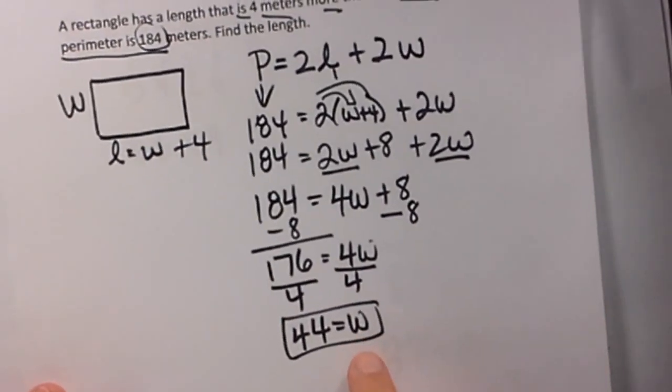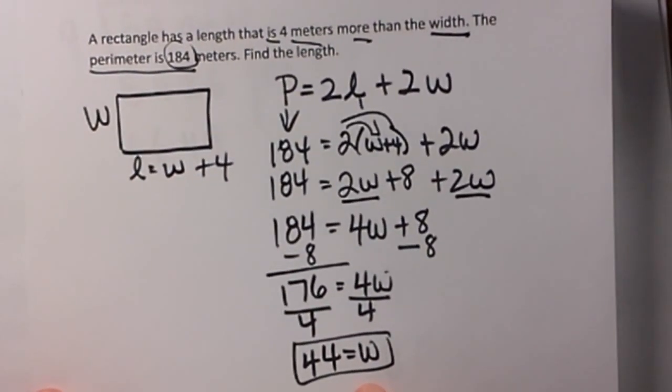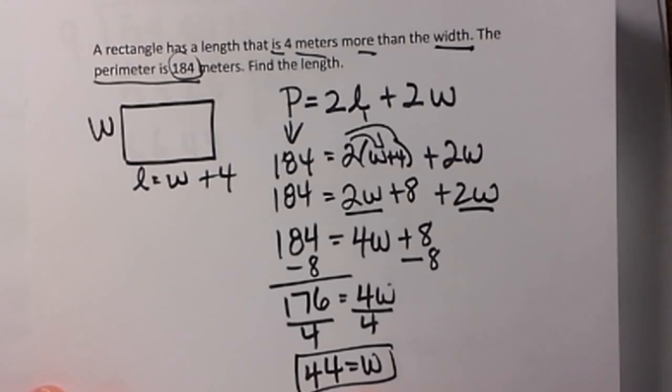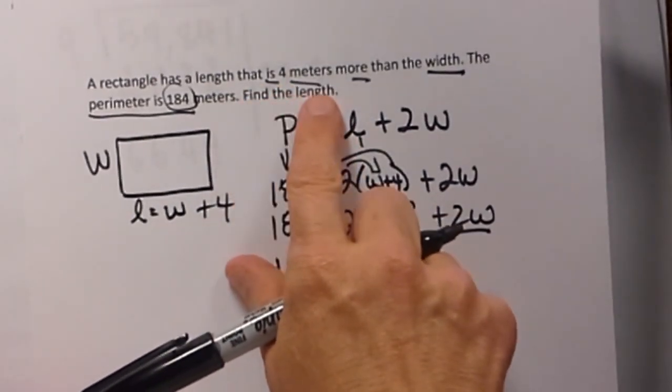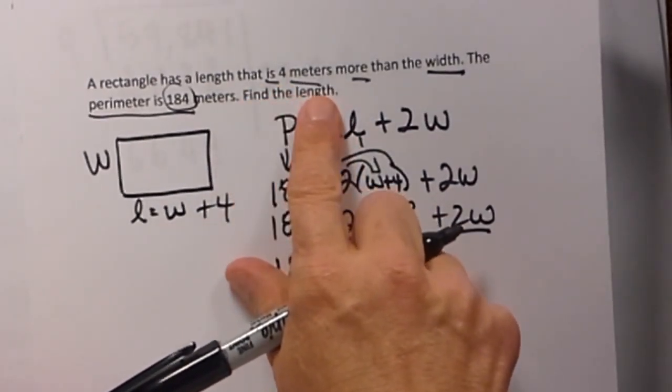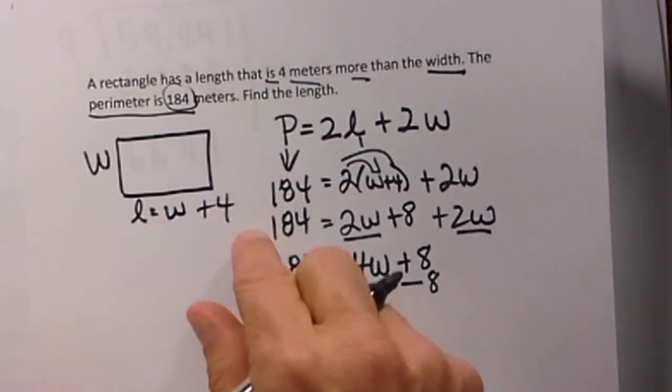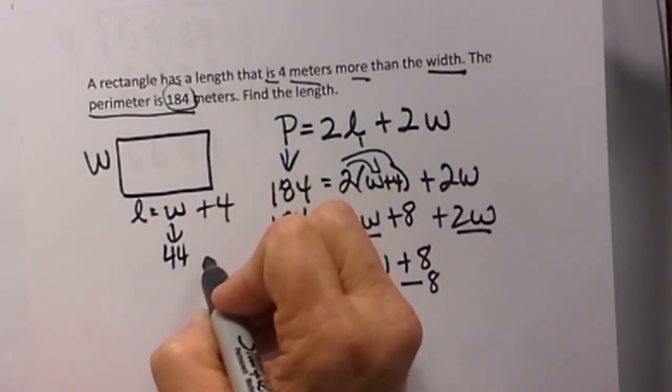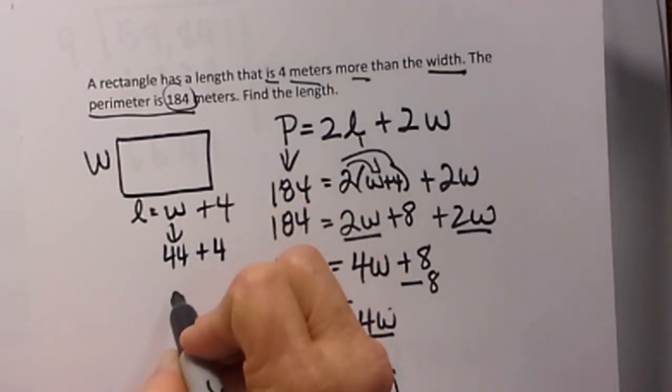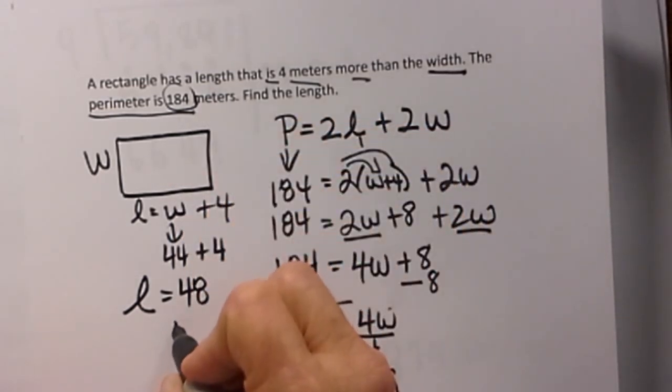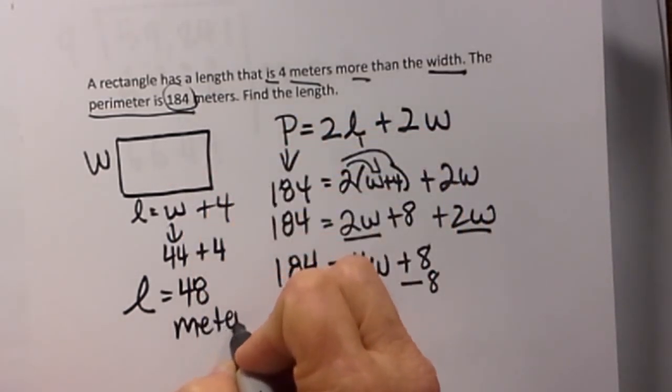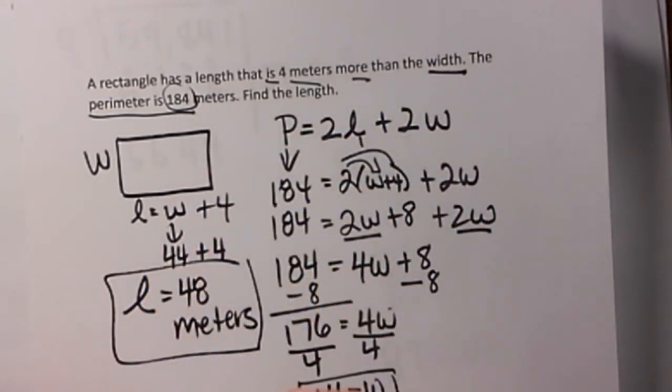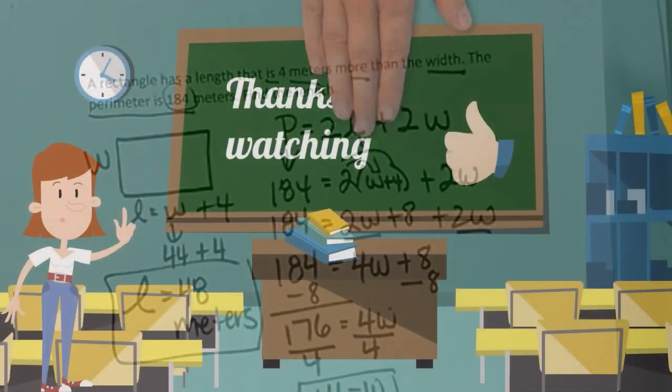But notice we are actually not done with the problem. Have we answered the question? Did it ask us what the width is? No. It asks us to find the length. So what we need to do now is plug into our formula. We know that our width is 44 plus 4 more. That means 48. That's going to be our length. So it's 48 meters. And there's our answer.